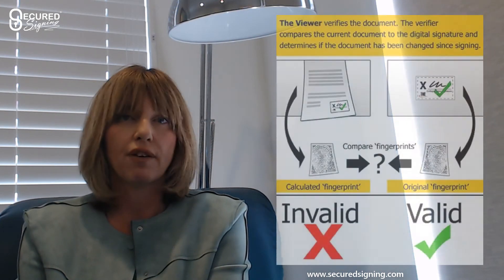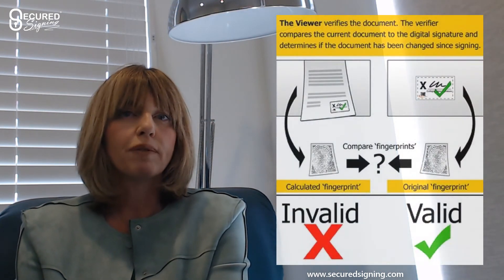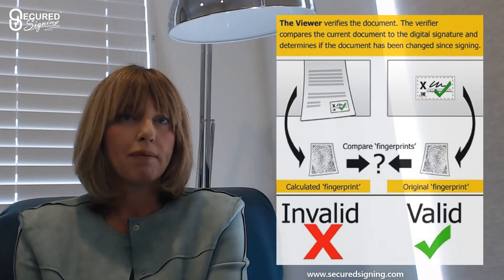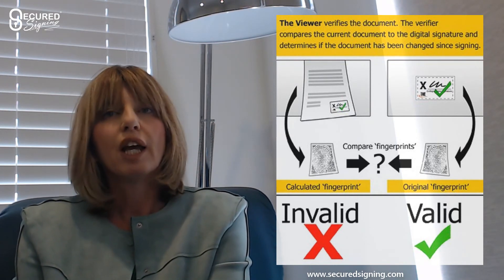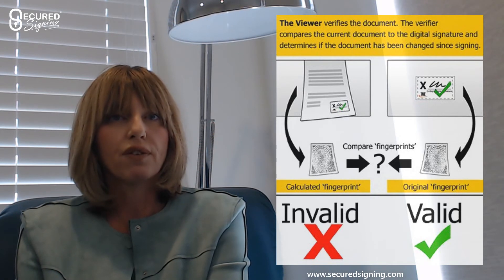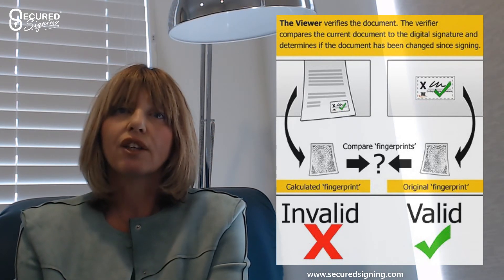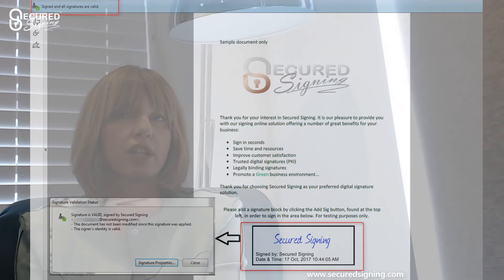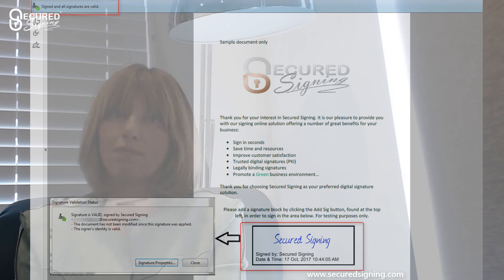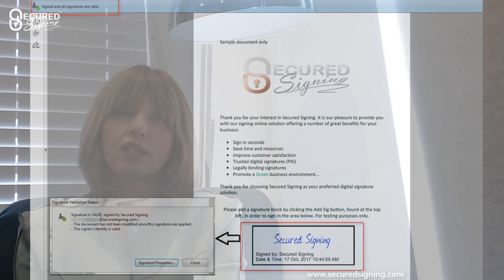You can validate this signature using any PDF reader. The reader will decrypt the signature with the signer's public key that traveled with the document's signature data. It will extract the document's fingerprint from the signature, recalculate the current document's fingerprint, and compare it with the original signature data. If they are the same, the document is valid. If they are unmatched, the signature is invalid, which means the document's content has been changed after the documents were signed.